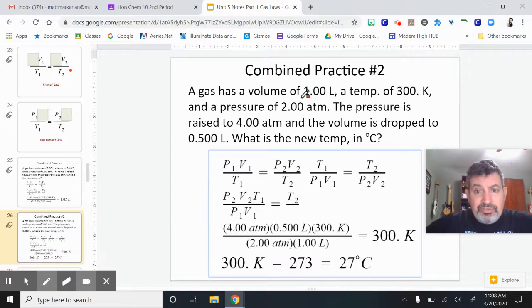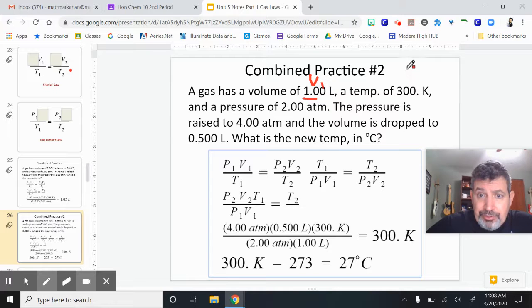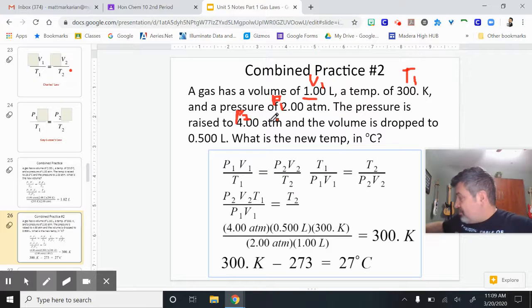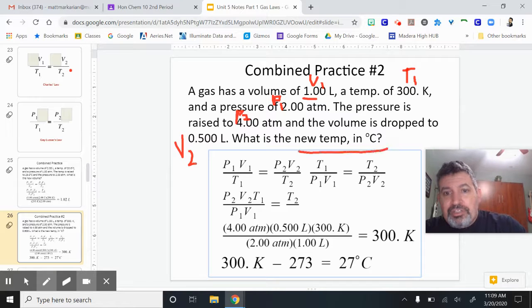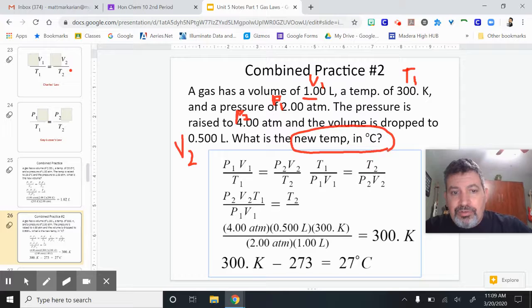This one, let's look at this because it's a temperature problem. Gas has a volume of 1.00 liter - that's V1. You have a temperature of 300 Kelvin, which is T1. That one's already in Kelvin - you're welcome. 2.00 atm is P1. The pressure is raised to 4.00 atm - that's P2. The volume is dropped to 0.500 liters - that's V2. It's asking for the new temperature, and it's also asking in Celsius, so we've got to take that extra step at the end.